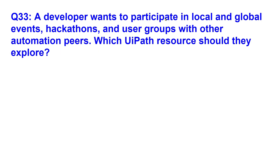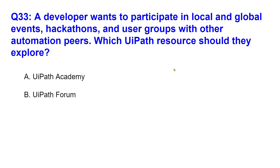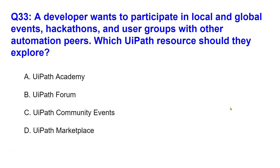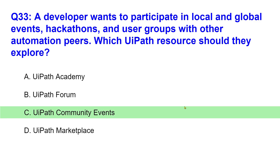Let's move on to the next question. A developer wants to participate in local and global events — the keyword is 'events' — hackathons and user groups with other automation peers. Which UiPath resource should they explore? Options are UiPath Academy, UiPath Forum, UiPath Community Events, and Marketplace. The right answer is Community Events — if you go to Community Events, you can register for events, so event-to-event, it's quite easy.